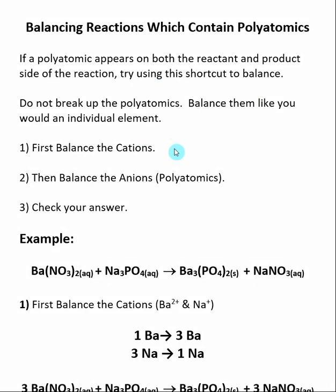Once you do this, there are three basic steps. First, you balance the cations in the reaction — these are the species listed on the left. Then balance the anions, which are typically your polyatomics. Remember there are only a couple of positively charged polyatomics, so most polyatomics are going to be anions.